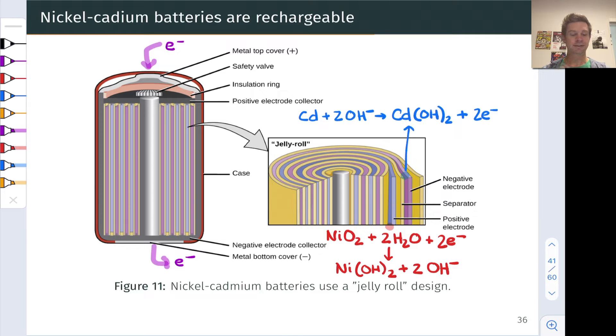And so the cathode in a nickel-cadmium battery involves the reduction of NiO2, that's nickel-4, to Ni(OH)2. This is nickel-2. That's a reduction process involving two electrons. And at the anode, cadmium metal is oxidized to cadmium hydroxide, Cd(OH)2, and two electrons. Now this is during discharge.